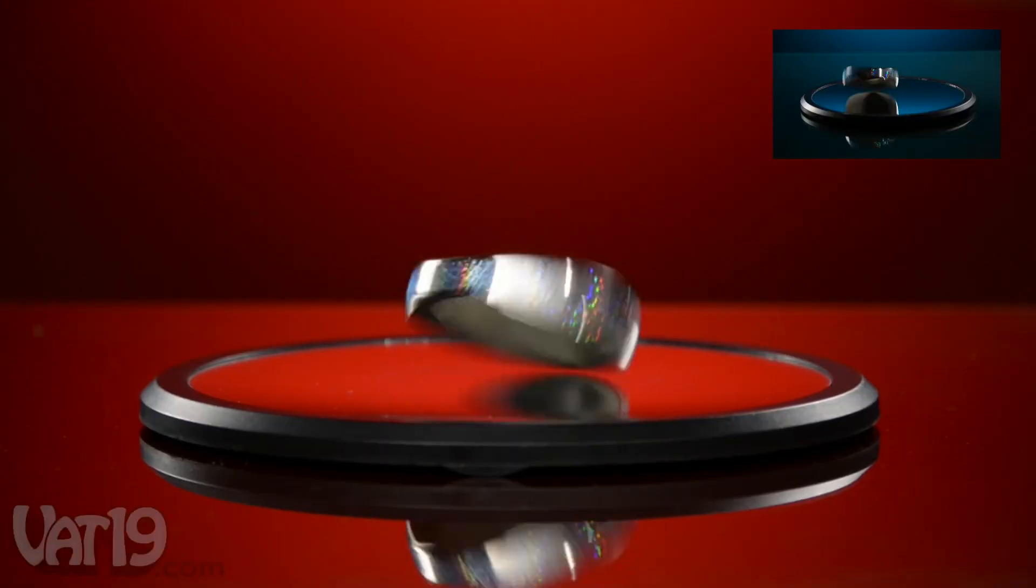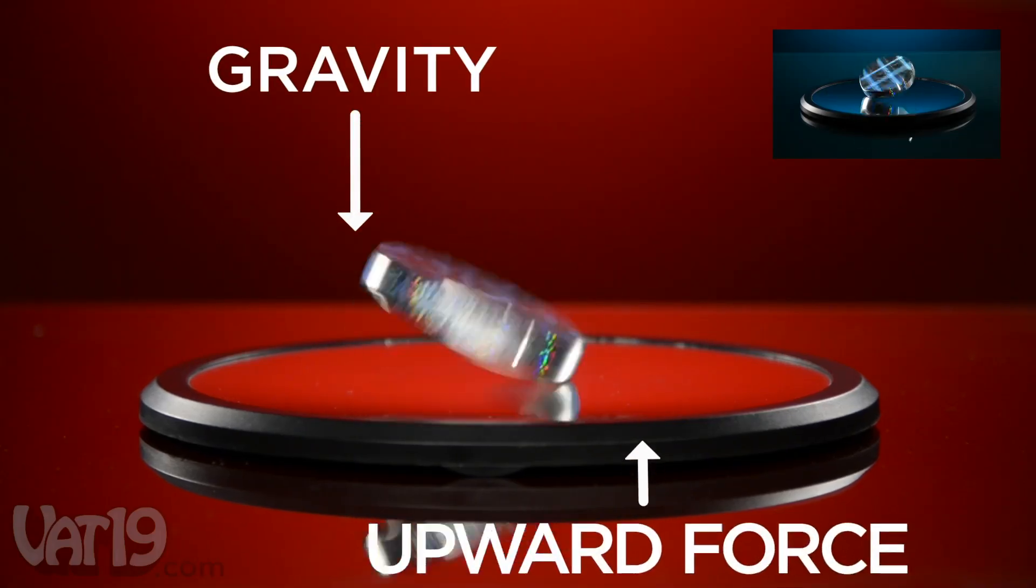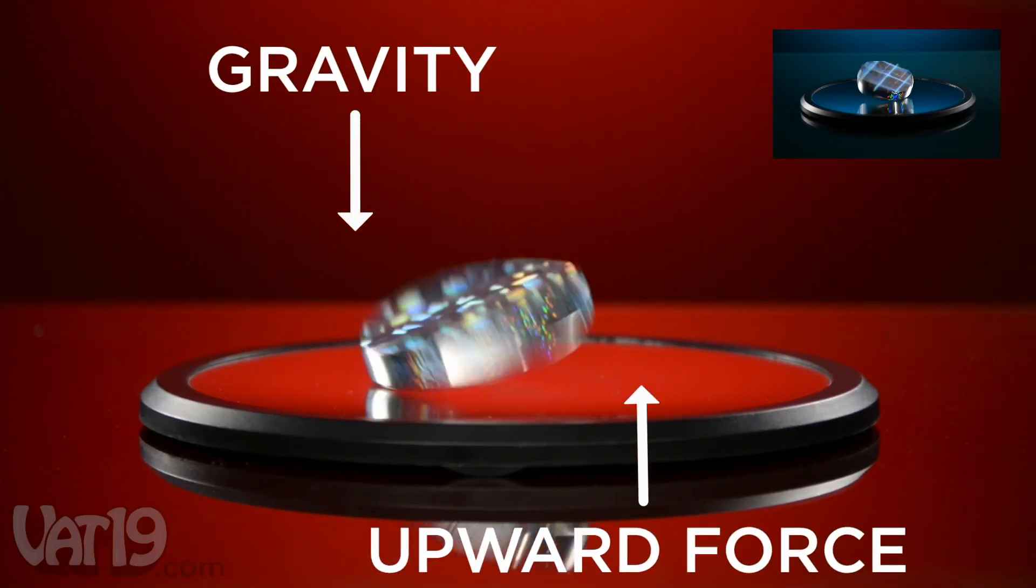The disk sprolls because it is held in a balance between the downward force of gravity and an upward force exerted by the mirrored base.